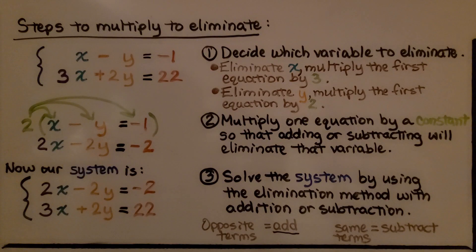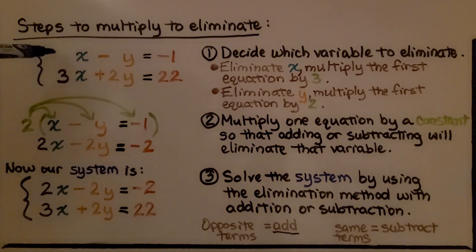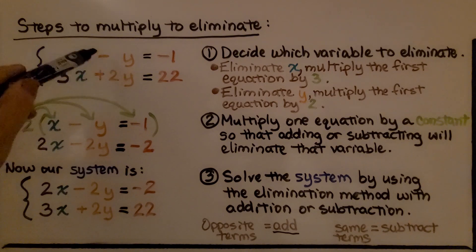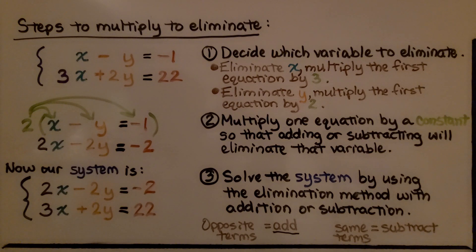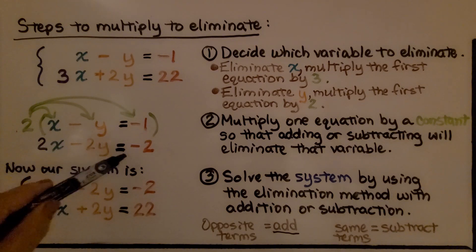Here are the steps to multiply to eliminate. We have our system of equations and we decide which variable to eliminate. If we eliminate the x variable, we multiply the first equation by 3 — that way we'll have 3x. If we want to eliminate the y, we multiply the first equation by 2, and then we'll have a negative 2y. We multiply one equation by a constant so that adding or subtracting will eliminate that variable. I decided to eliminate y by multiplying by 2. I distribute the 2 to the x, the negative y, and the negative 1, and we get 2x minus 2y is equal to negative 2.